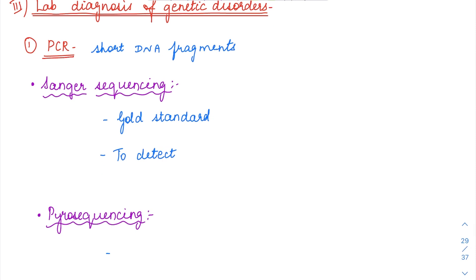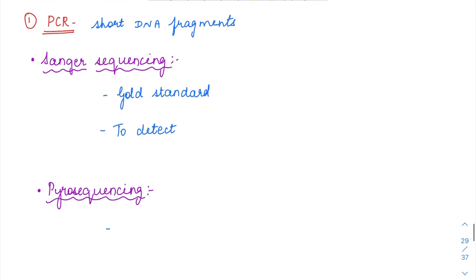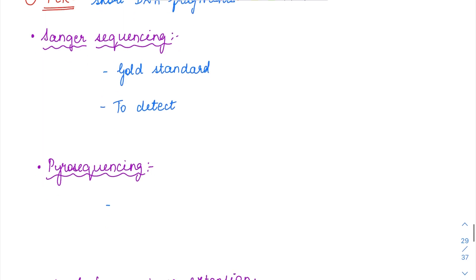So the first one will be the polymerase chain reaction. Polymerase chain reaction is usually used for amplification and detection. Amplification usually happens for very short DNA fragments — so very short DNA fragments will be amplified and then they will be sequenced. Various methods use PCR, so let us see one by one.